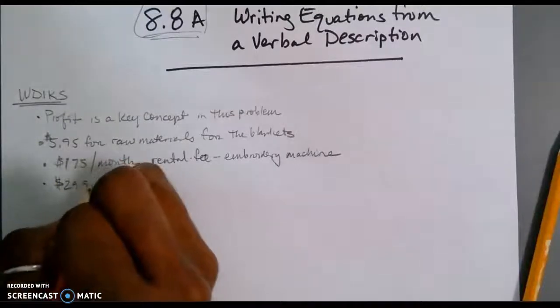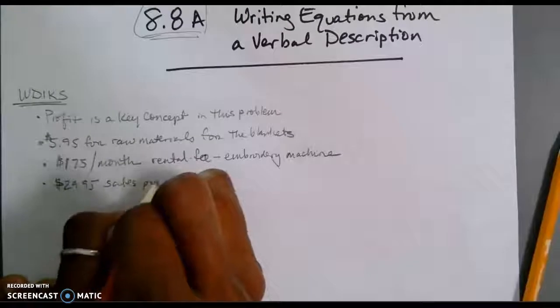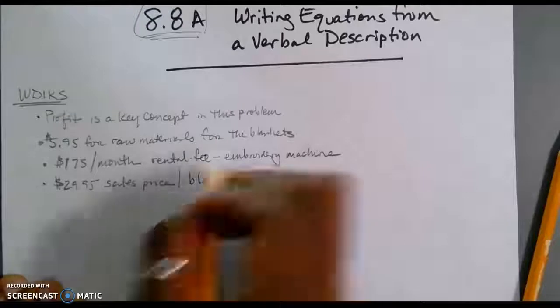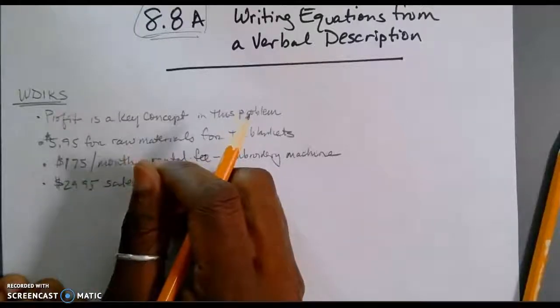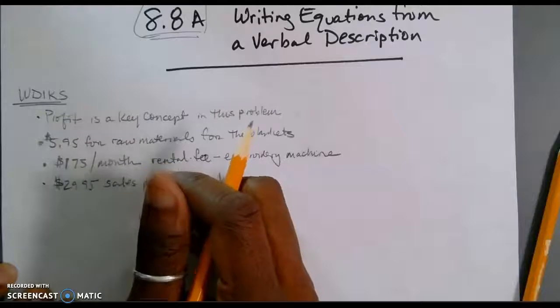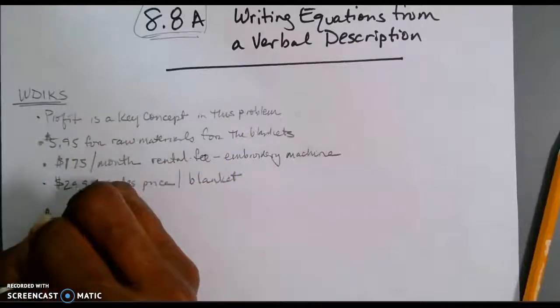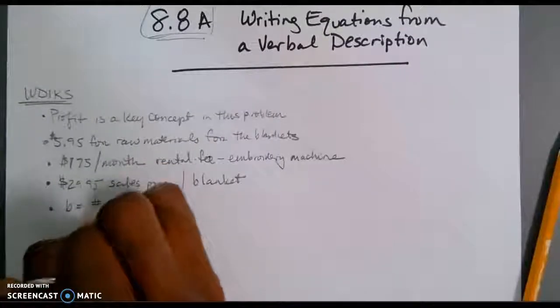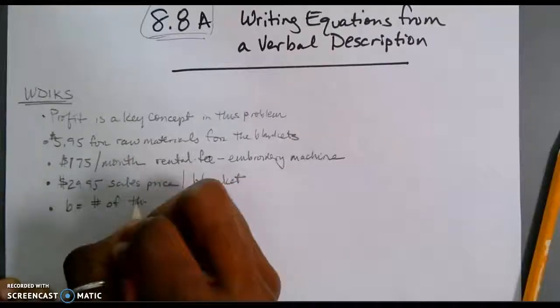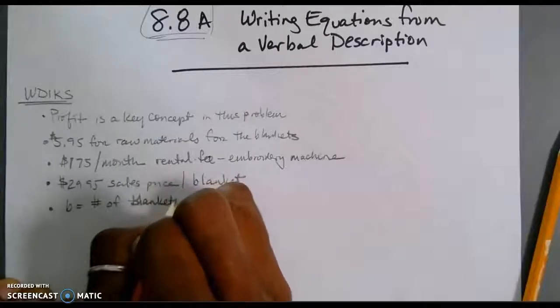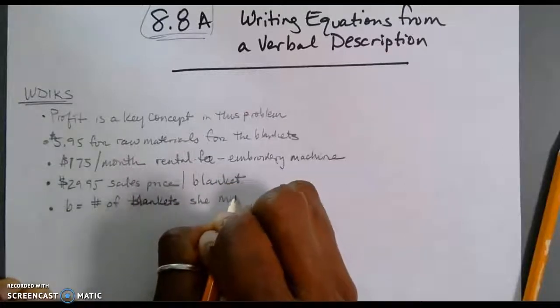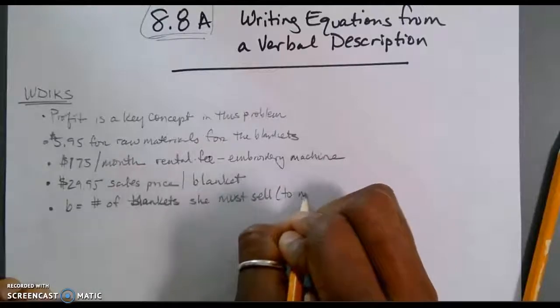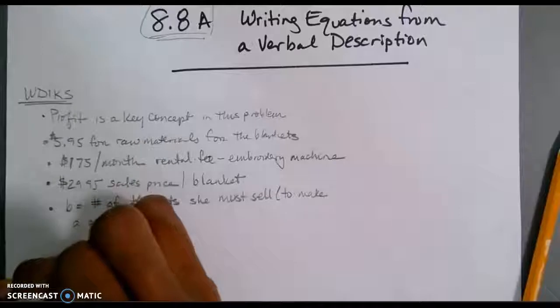$29.95 is going to be the sales price per blanket. However she figured out that amount or that's just what she chooses to charge, she's charging $29.95 per blanket. Now, the things that we don't know, as it said in the problem, we need to find B and B is going to be the number of blankets she must sell to make a profit.